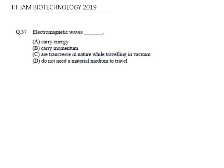Hello, today we are going to solve one question from IIT JAM Biotechnology 2019. As we know, JAM is one of the most important examinations in our country for students who want to join IITs to pursue their master's degree courses. This is question number 37 from Section B, which is an MSQ type question, meaning more than one option can be correct.